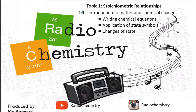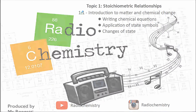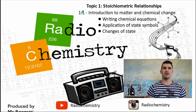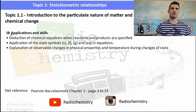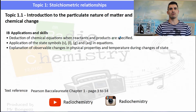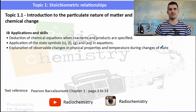Welcome to another video. This is still topic one, stoichiometric relationships, and we're still on 1.1 introduction to matter and chemical change. In this video we need to look at writing chemical equations, applying state symbols, and then looking at some changes of state — covering the IB applications and skills for writing chemical reactions, applying state symbols, and explaining changes in physical and chemical reactions.